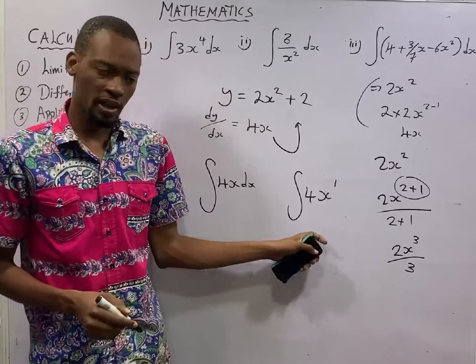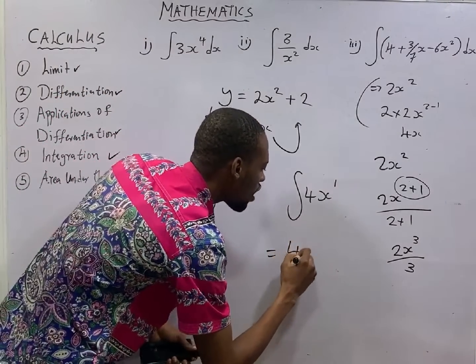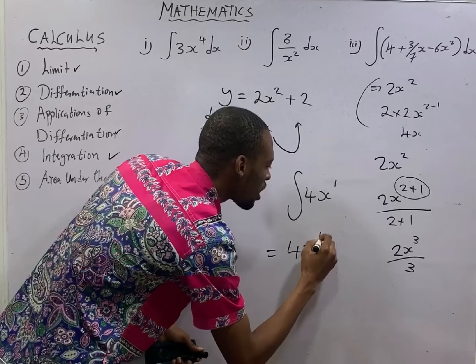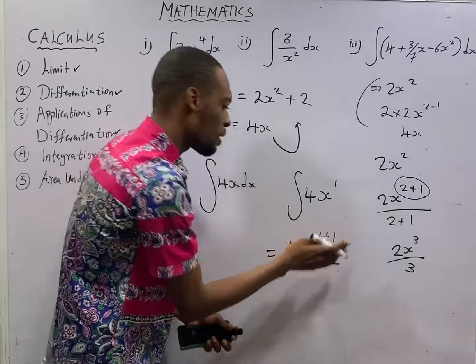Divide by the power. This will be 4x raised to the power of 1 plus 1. You divide by everything in the power.